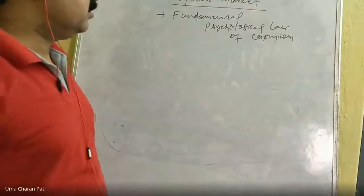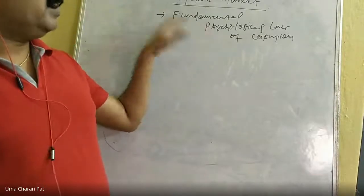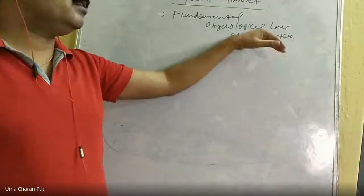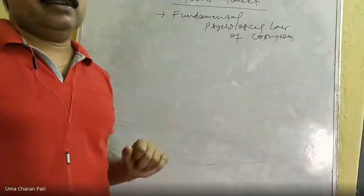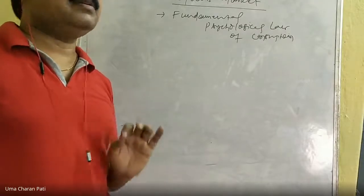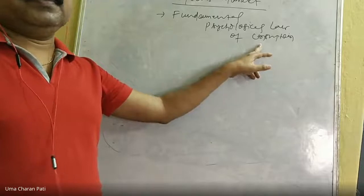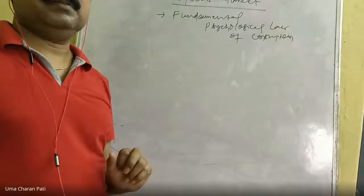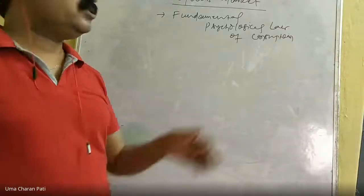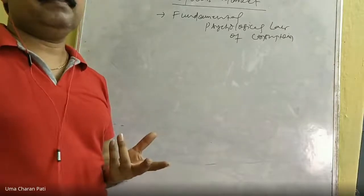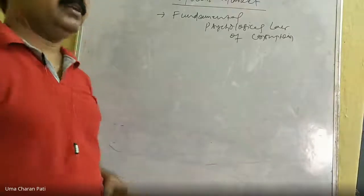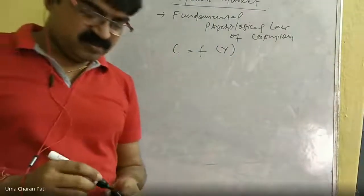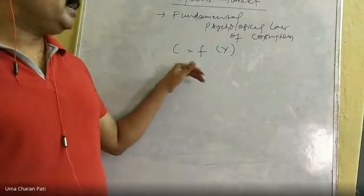The Keynesian goods market equilibrium is based on what is called the fundamental psychological law of consumption. This law states that consumption is a function of income level. How much we consume depends on how much income we have, with other factors remaining constant — cultural, institutional, customary factors, rate of interest, climatic conditions, and so on.